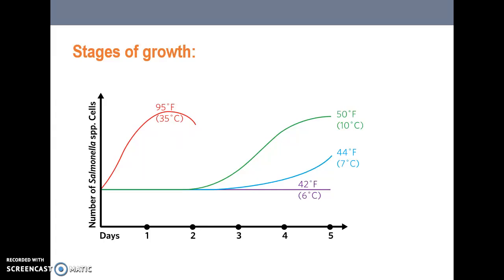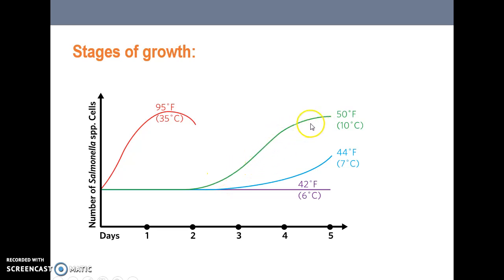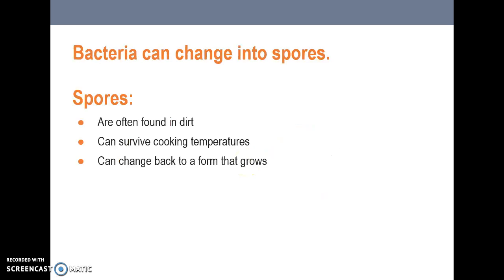Here's an example for Salmonella. You can see over the course of one day how rapidly it can grow, reaching a peak at 95 degrees Fahrenheit — the best temperature for its growth. At 50 degrees, which falls in what we call the danger zone, growth is also significant. Bacteria can also change into spores, produce toxins, and spores can survive cooking temperatures and revert back to a growing form. They're very dangerous.